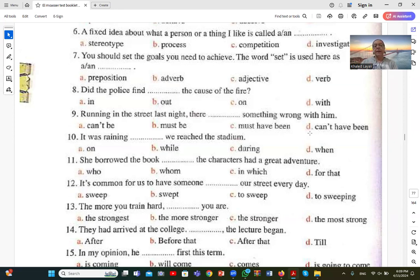Number ten: It was raining blank we reached the stadium. When. When we reached the stadium. The linking word here is when. When is the opposite of while. While comes before continuous tense and the other clause is simple. When comes before simple tense and the other clause is continuous. So when we reached is past simple, it was raining is past continuous.